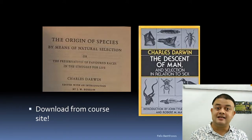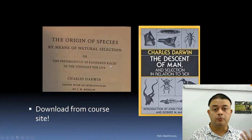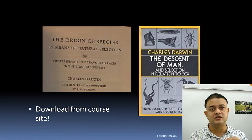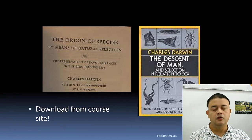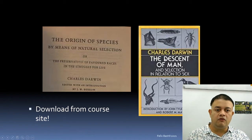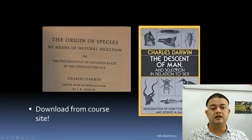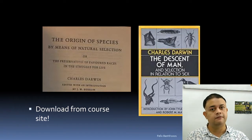Darwin wrote the Origin of Species by Means of Natural Selection, with the alternative title 'or the Preservation of Favoured Races in the Struggle for Life.' Here 'race' means a variant or mutation — those mutations advantageous for survival. He also wrote The Descent of Man and Selection in Relation to Sex. Both are in the public domain and can be downloaded freely.